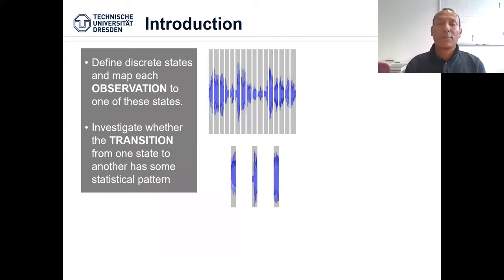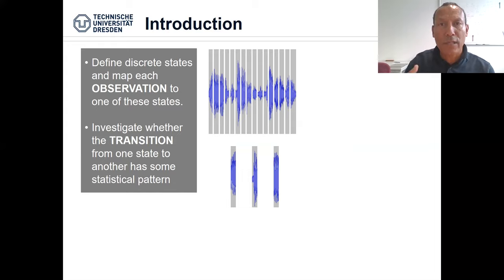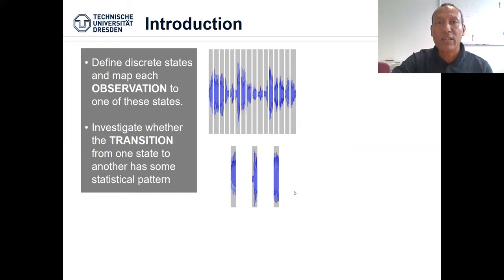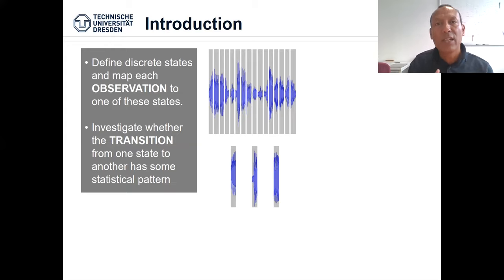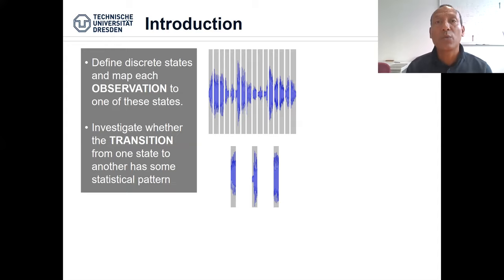One approach to build a model would be to segment the time series into different units, each having the same duration. In each fragment, we wish to map into one of the discrete states. We want to see, for different types of words, how the state transitions over time — we suspect there is an underlying pattern for transitioning into different states, and this is what we wish to model in a probabilistic sense.